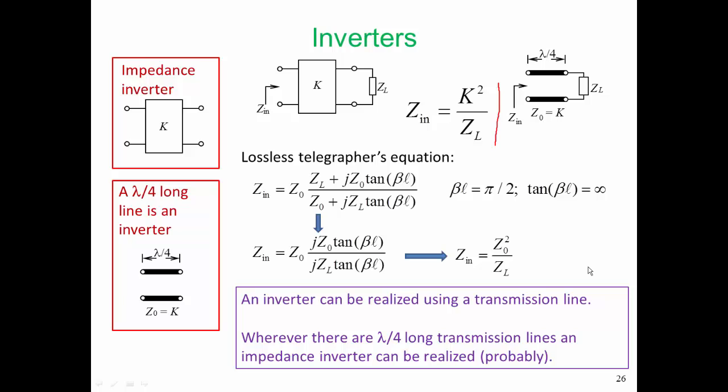So an inverter can be realized using a transmission line. And nearly always, wherever there are lambda on four long transmission lines, an impedance inverter can be realized.